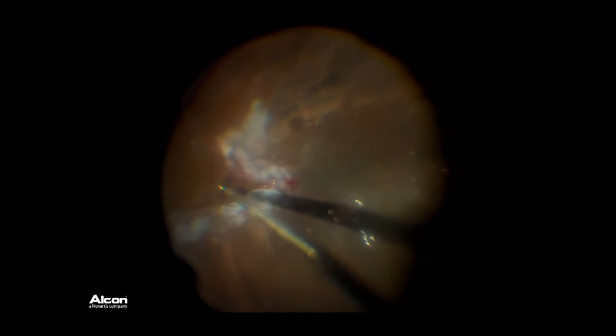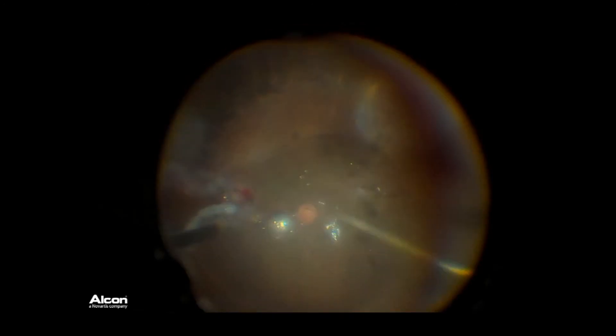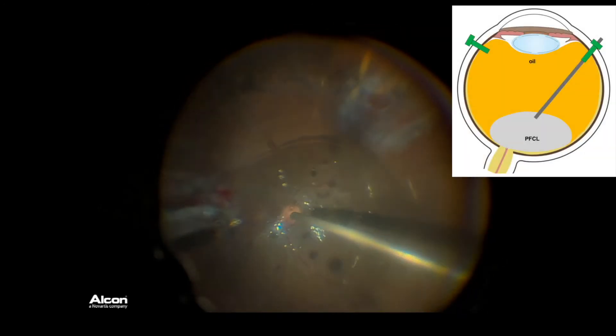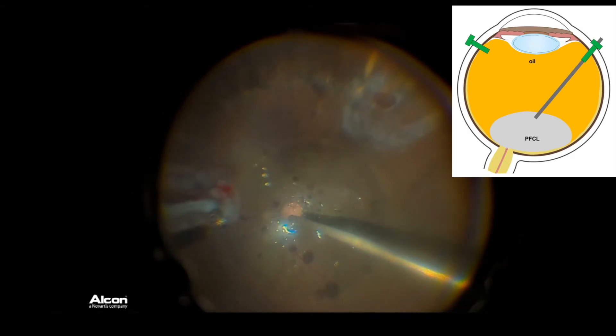When this is achieved and the edges of the retinal tears are stuck down flat on the choroid, one follows the meniscus backward over the optic nerve to remove the rest of the peripheral carbon liquid, as shown here.